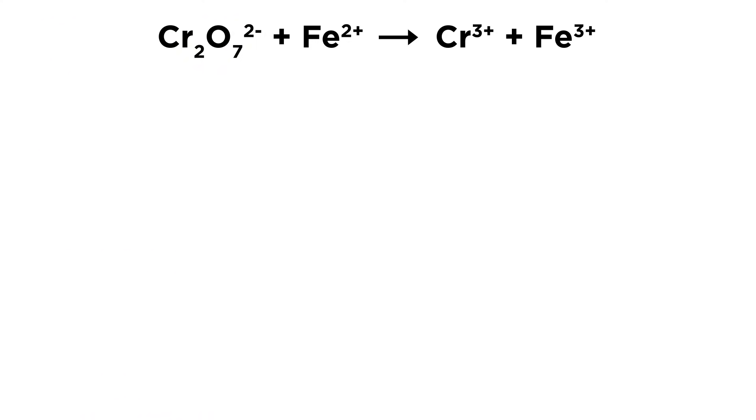For example, in aqueous solution, the dichromate ion will react with iron two plus to yield chromium three plus and iron three plus. How do we balance this?